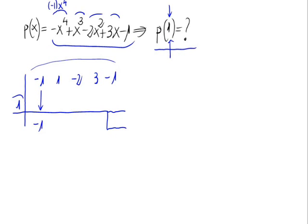Now, this minus 1 goes down there, and we have to multiply it times 1, and that equals minus 1. 1 plus minus 1 is 0. Now, 1 times 0 is 0, and minus 2 plus 0 is minus 2. 1 times minus 2 is minus 2. 3 plus minus 2 is 1, and 1 times 1 is 1, so minus 1 plus 1 is 0.